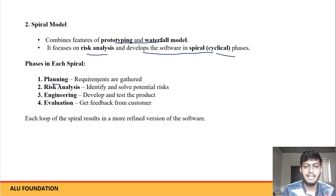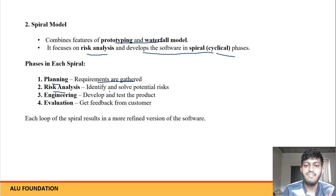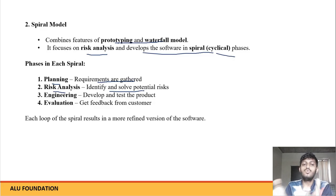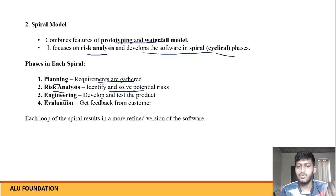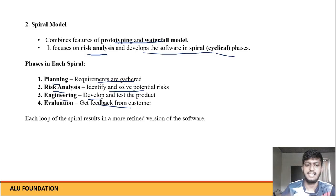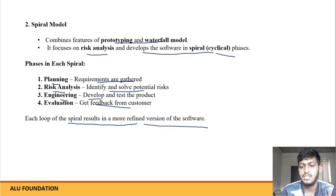The Spiral Model has four phases. First: Planning — requirements are gathered. Second: Risk Analysis — identify and resolve potential risks. Third: Engineering — develop and test. Fourth: Evaluation — get feedback from the customer. If changes are needed, we do not stop; we go back to planning, risk analysis, engineering, and evaluation again. Each loop of the spiral results in a more refined version of the software.